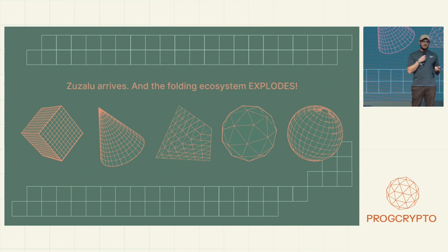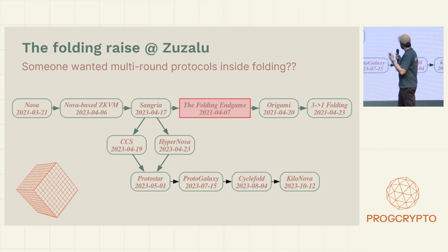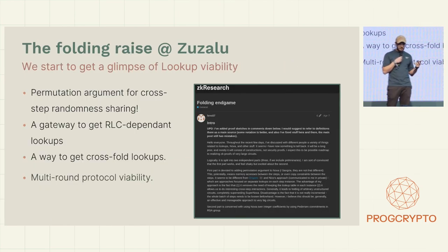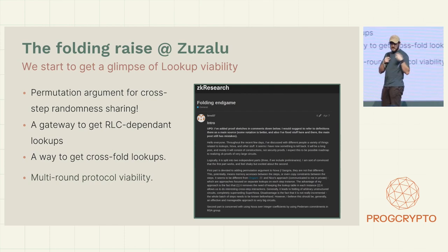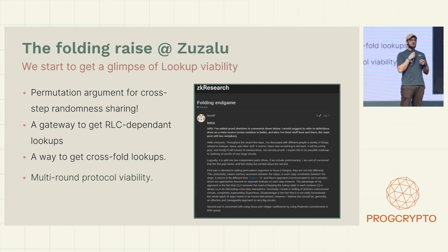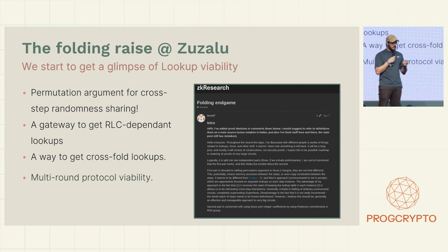Zuzalu arrives, and we were Nova-pilled — it was crazy. Everyone was looking into it. And then Lev finally found a hacky way to put two-round protocols or multi-step protocols, and kind of lookups, inside of folding schemes. And this was one of the first times where I was like, we might get there. If we keep pushing through these barriers, we might actually get there.